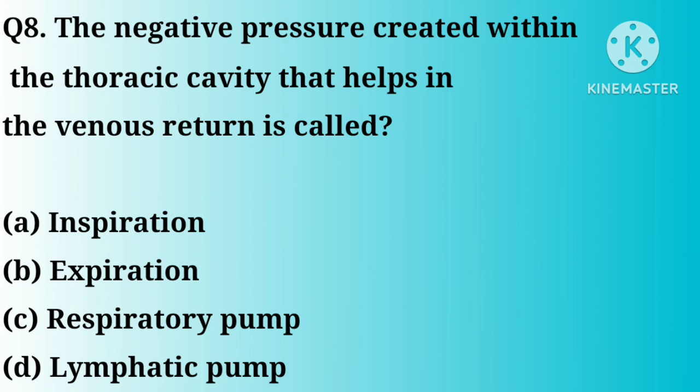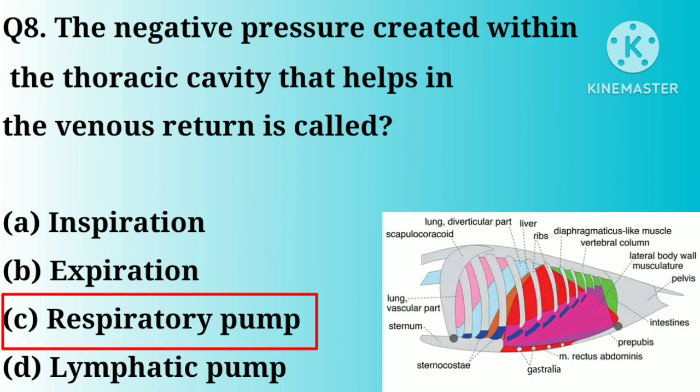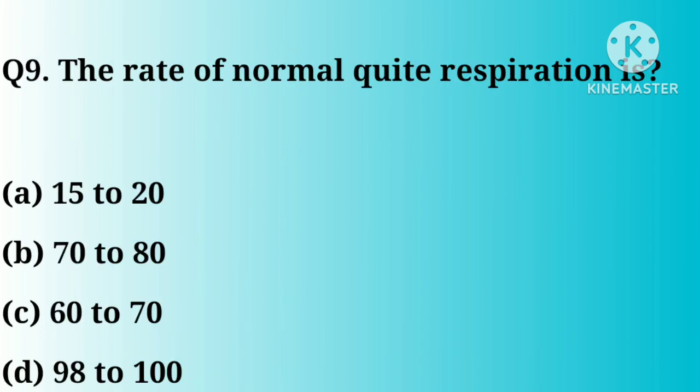Q8. The negative pressure created within the thoracic cavity that helps in the respiratory pump pattern is: option A, inspiration; B, respiration; C, respiratory pump; D, lymphatic pump. Great answer, option C.